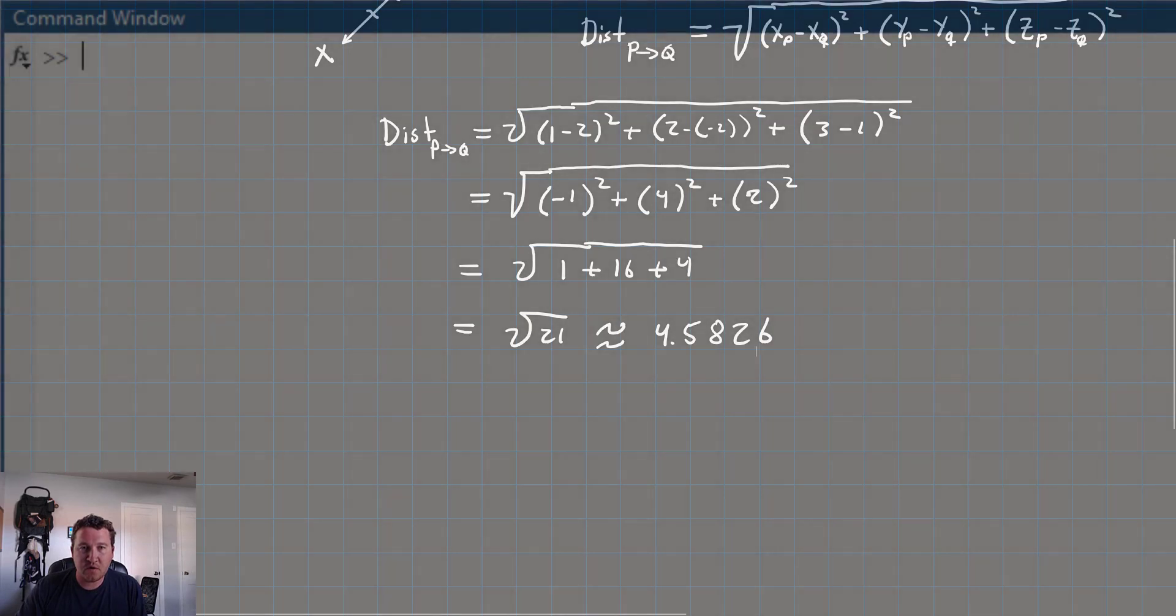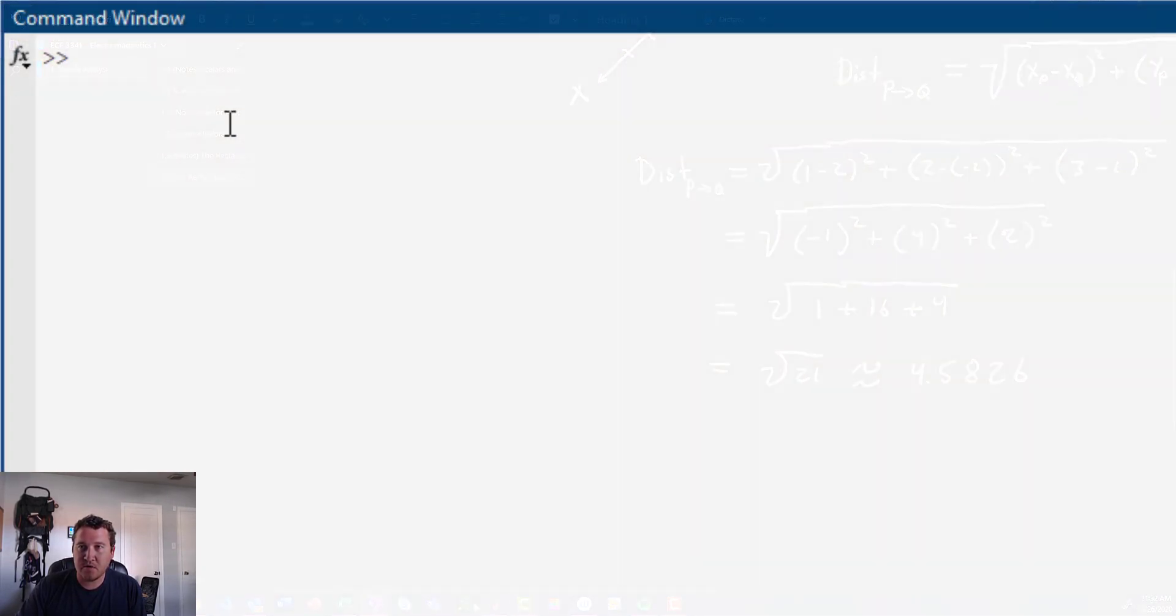Let's go ahead, if you didn't want to do all this arithmetic, let's go ahead and jump into MATLAB real quick, and we're going to see kind of how that would look in MATLAB. So, let's create our two points. Let's say we have p equal to 1, 2, and 3, and q equal to 2, negative 2, and 1.